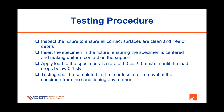Testing procedure: The loading strip should be inspected to make sure that all contact surfaces are clean. The specimen should be installed on the loading strip in a way that it is centered and making uniform contact on the loading strip. The loading shall be applied at a deformation rate of 50 mm per minute until the load drops below 0.1 kN. Please consult with the operator manual, equipment manufacturer, or VTRC for how to operate your equipment. It is important that the testing shall be completed in 4 minutes or less once the specimen is removed from the conditioning environment.